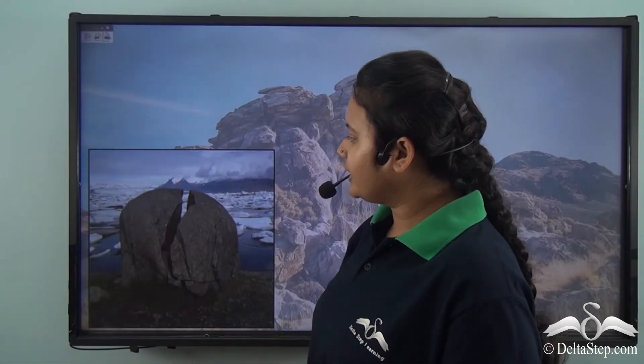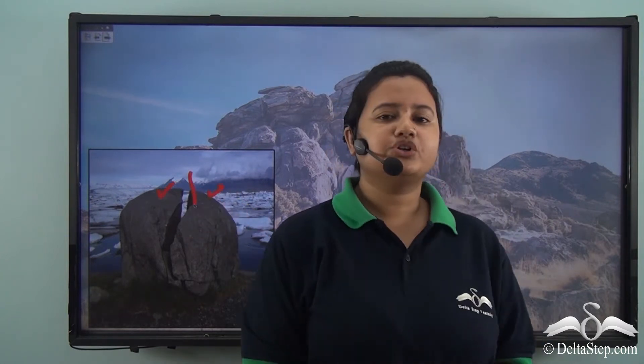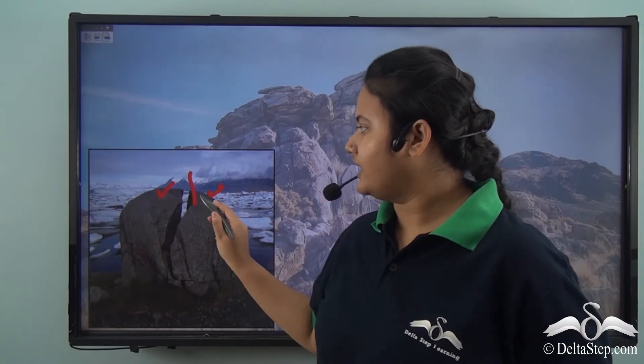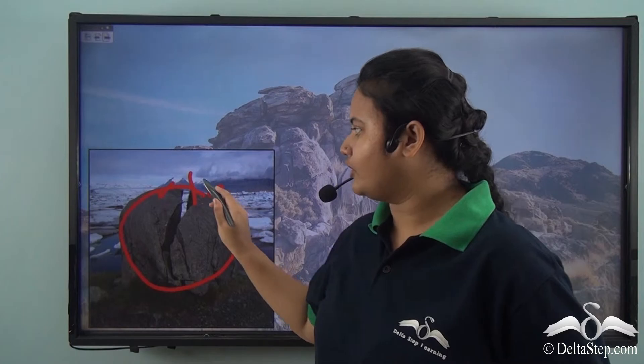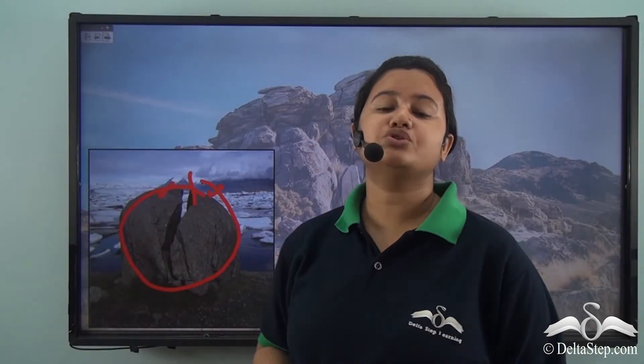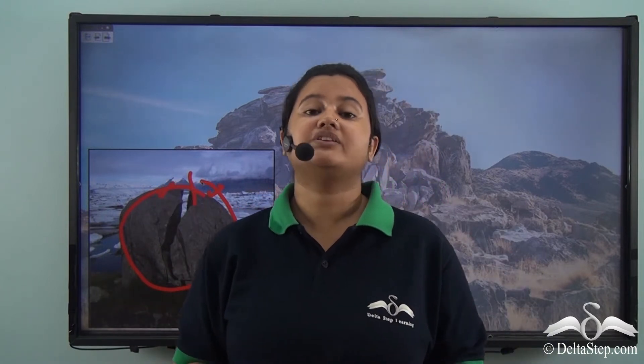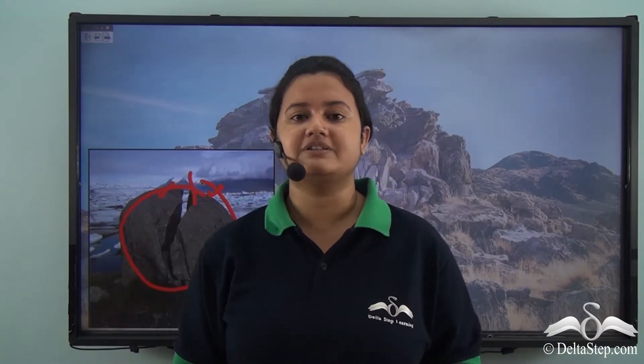Now look at this rock. This rock is broken into two pieces. But do you think this rock was always like this? Obviously not. This rock was once a single piece, but then due to weathering it is broken into two pieces. This type of weathering where the rock is broken into pieces is called physical weathering.